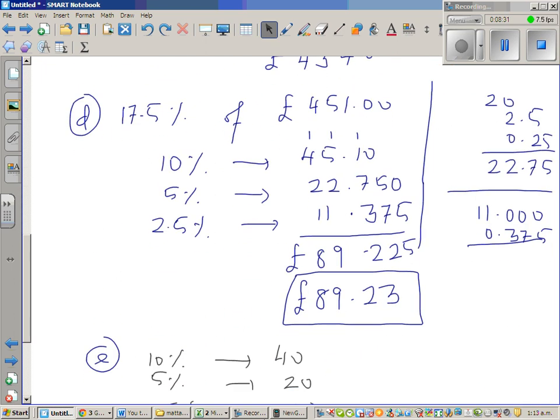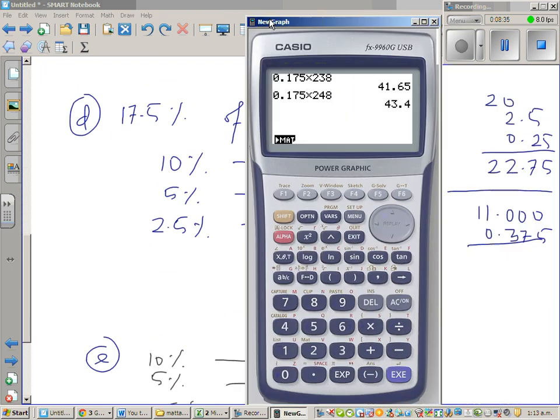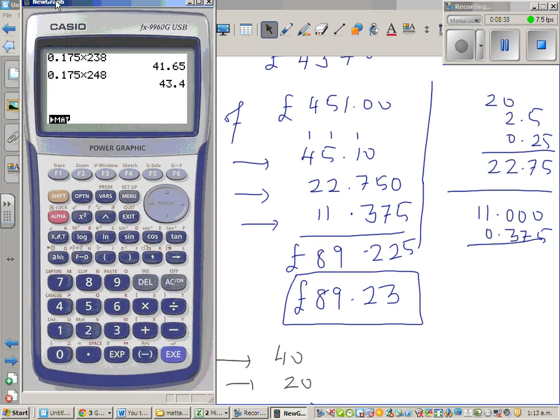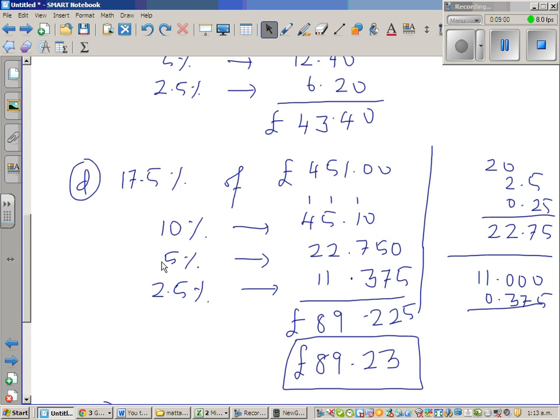For D, 0.175 times 451. 79... I have made a mistake here. Okay, so let's find the mistake. What's the mistake that we did? Always good to check. £45.10, £22.75. This was right. Okay, hopefully 78.925.